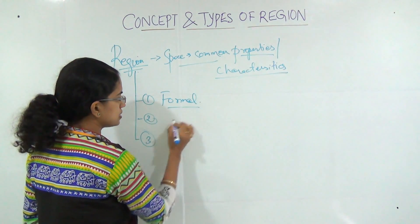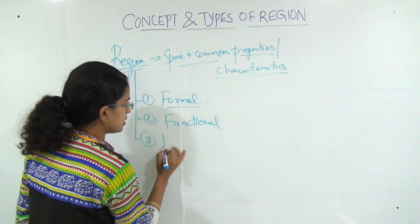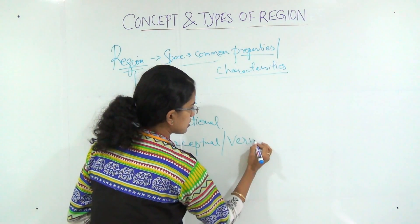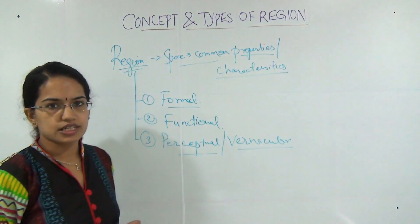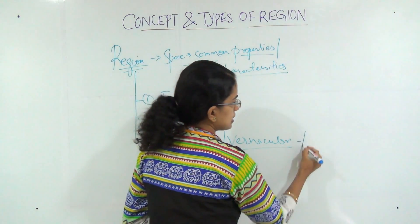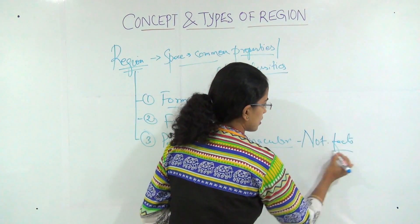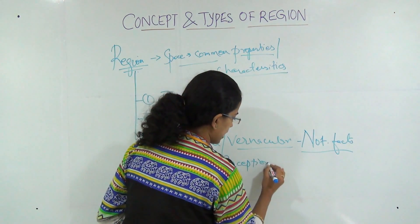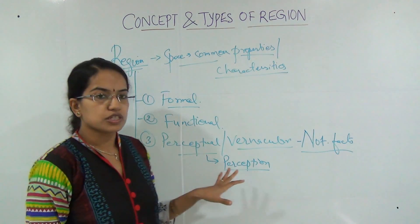You have the formal region, the functional region, and the perceptual region. Perceptual regions are also known as vernacular regions. The example we just discussed is a perfect example of a perceptual region. Perceptual regions are basically regions which are not based on facts — they are just based on perception, which is what we see and understand. It can be different for different people. That is what a perceptual region is.